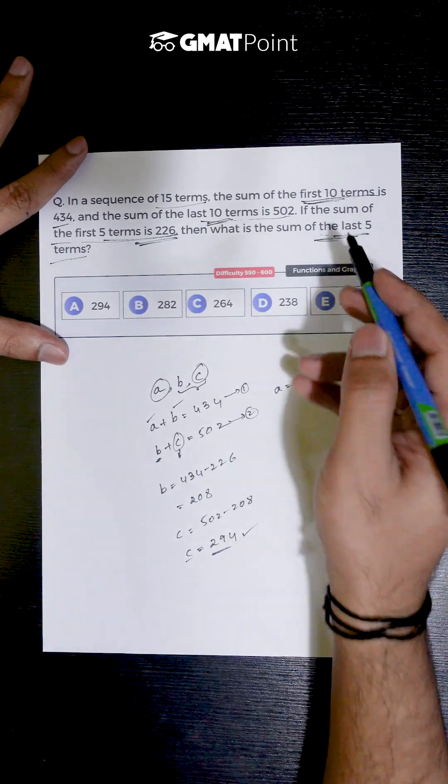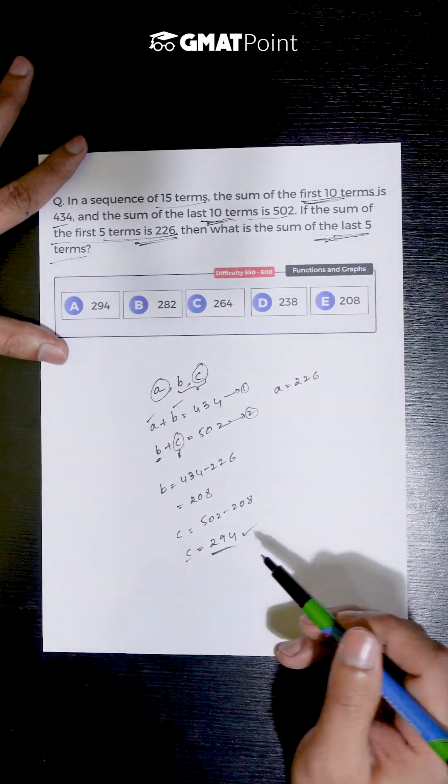So the value of c is nothing but the sum of the last 5 terms, and we obtained it to be 294.